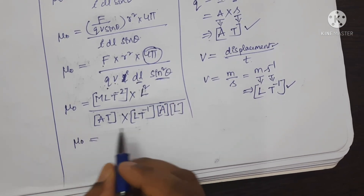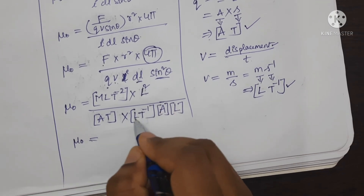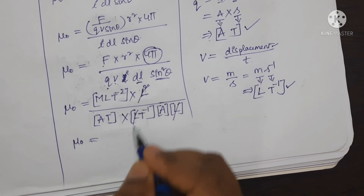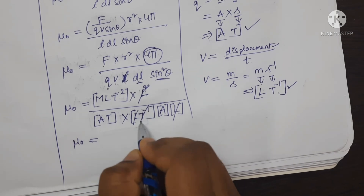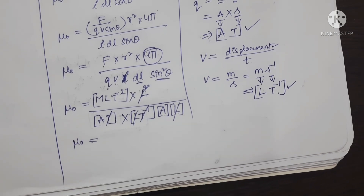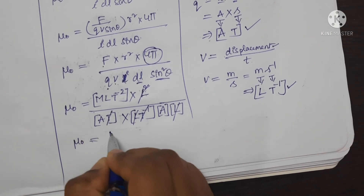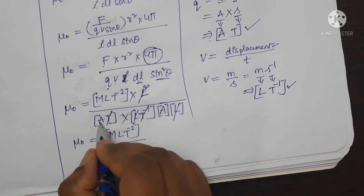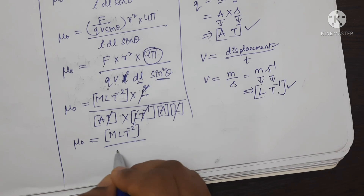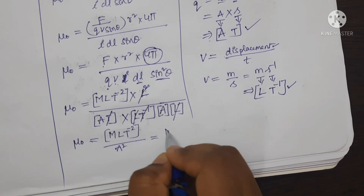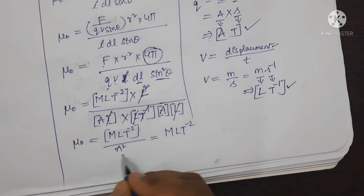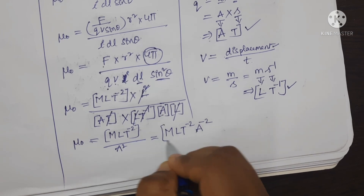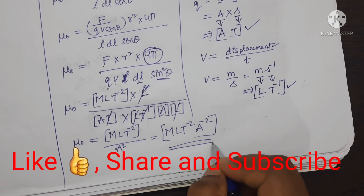Now, doing the simplification: L from DL and L² from R² — one L cancels, leaving L in the numerator. T⁻¹ and T cancel. The remaining terms are [MLT⁻²] in the numerator over A × A = A² in the denominator. This gives [MLT⁻²A⁻²], which is the dimensional formula for permeability of free space.